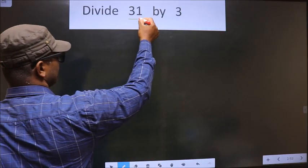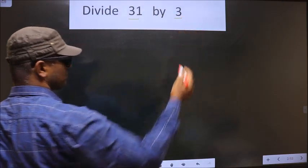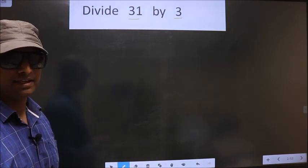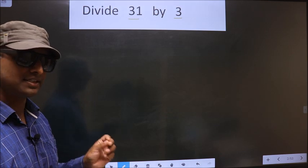Divide 31 by 3. While dividing numbers, many do this mistake. What is this mistake? See here.